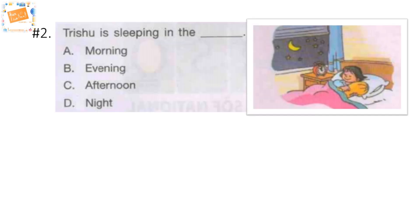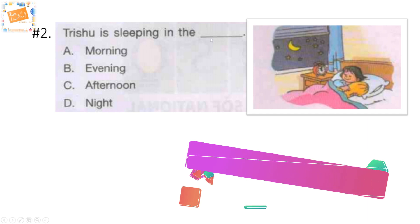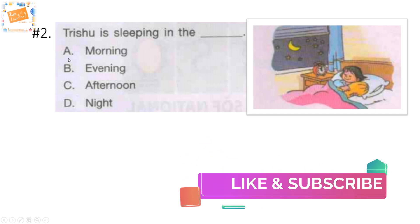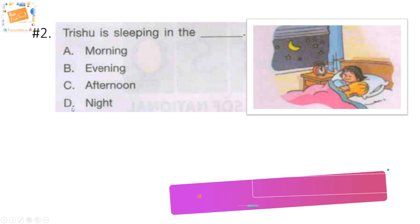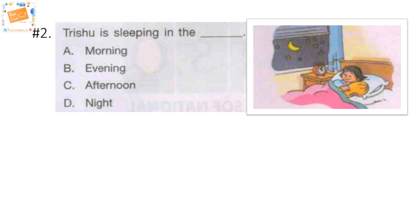Let's go to the next question. The next question says Trishu is sleeping in the dash. Option A: morning, B: evening, C: afternoon, and D: night. You can get this one.